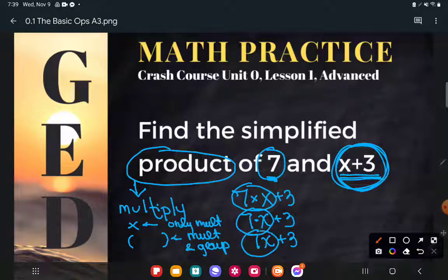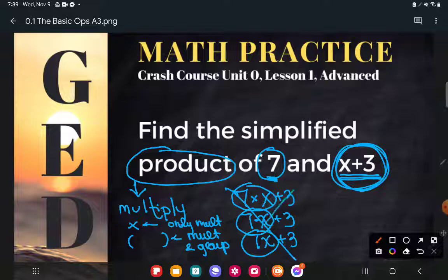Remember, multiplication comes before addition. So all of these say multiply seven times x and then add three. And that's not what this expression here says. Okay, so all of these are kind of nonsense.